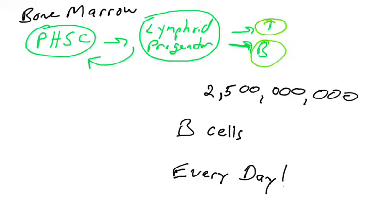Every day in your bone marrow throughout your body, two and a half billion cells undergo B-cell development, which means they undergo the journey of generating VDJ recombination and testing their immunoglobulins to see if they can make a functional, useful B-cell receptor. So we're going to go through that process now.